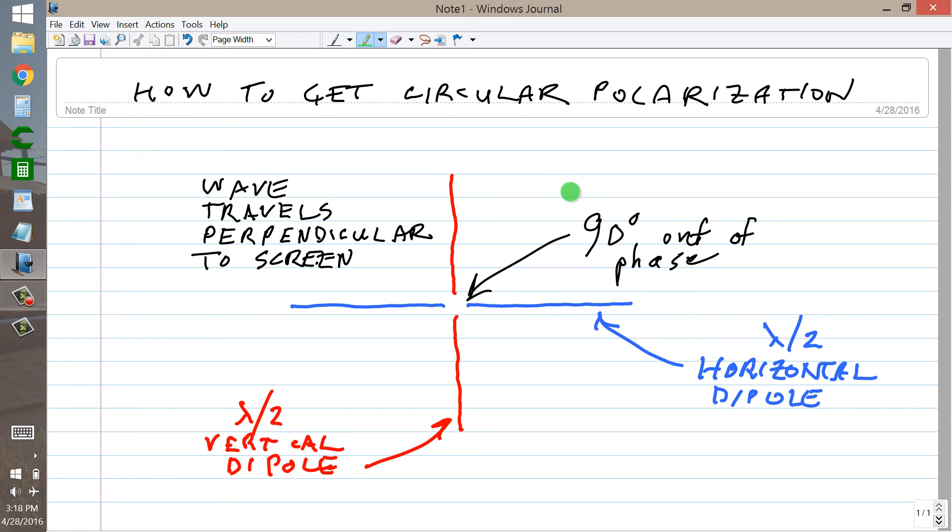The magnetic lines of flux simply run at a right angle to whatever the electric lines of flux run at, but still in the plane of the screen. The direction of wave travel is perpendicular to the plane containing both the electric and magnetic lines of flux. So that means it comes either at you or runs away from you.